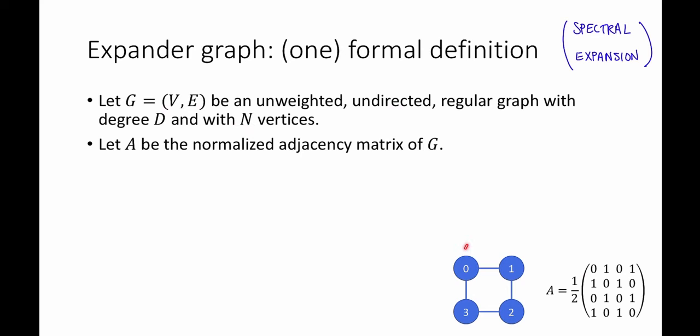For example, maybe G looks like this. Let's let A be the normalized adjacency matrix of G. So that is, A is just going to be the adjacency matrix of G times one over D. That's the normalization factor.